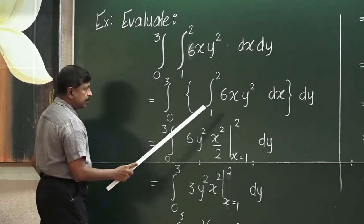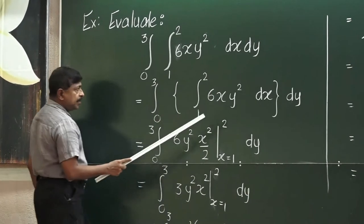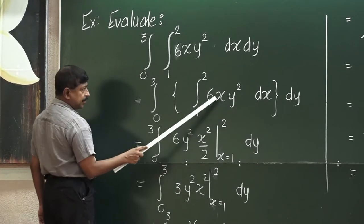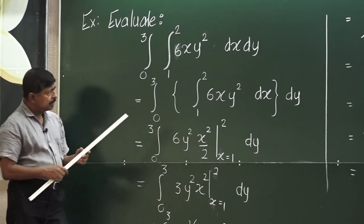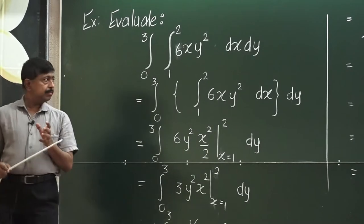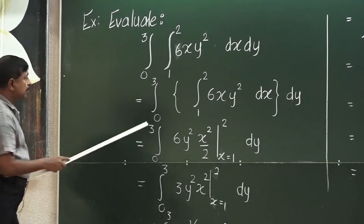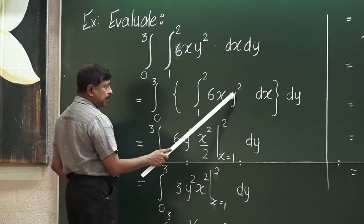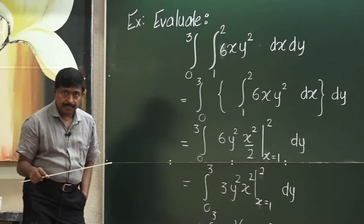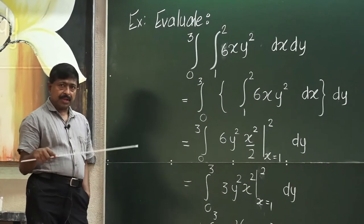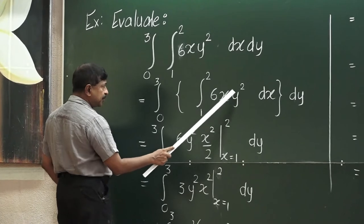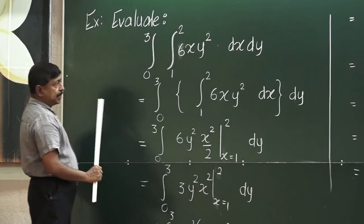After that, you add a pair of braces. Here the variable is x. However, you have two variables involved in this integrand. Therefore, you keep the variable y as a constant. So x is the variable.